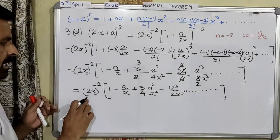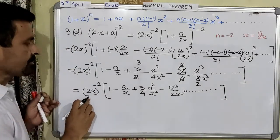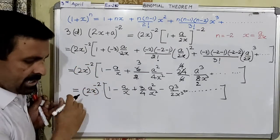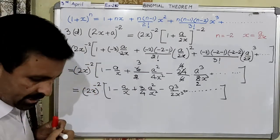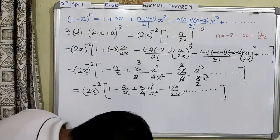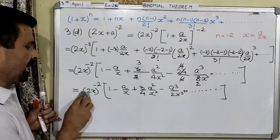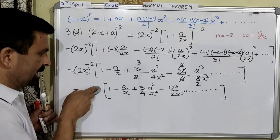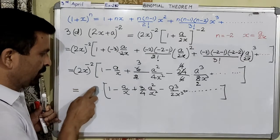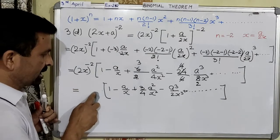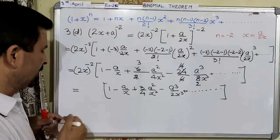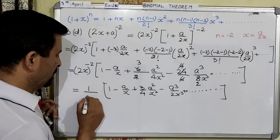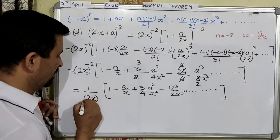After this now, at the end, this power was negative. We can make this power positive by writing this in the denominator — you would know the exponential rule, you have studied in class 9: if you want to change the sign of the power, you have to change the position of the number. So we can write this as 1 over 2x to the power 2.